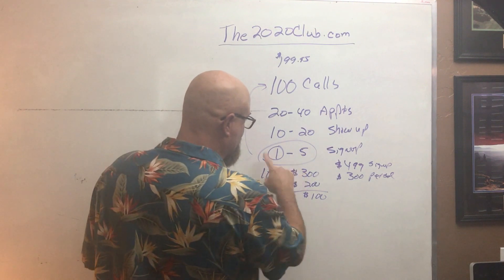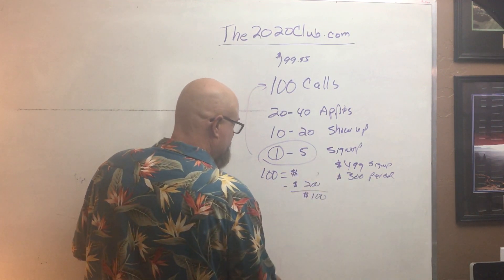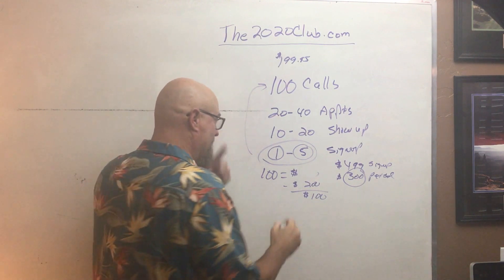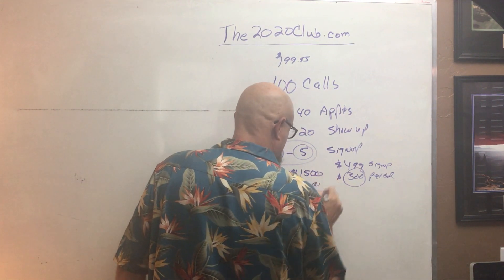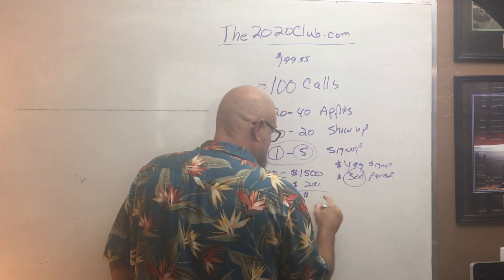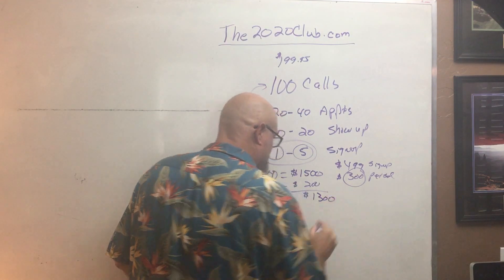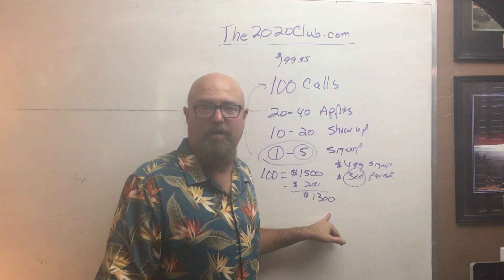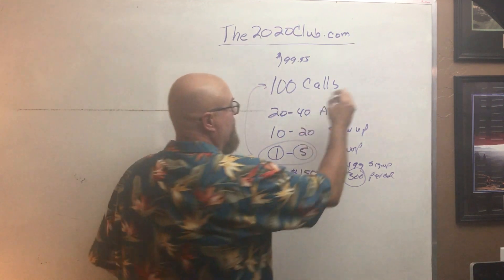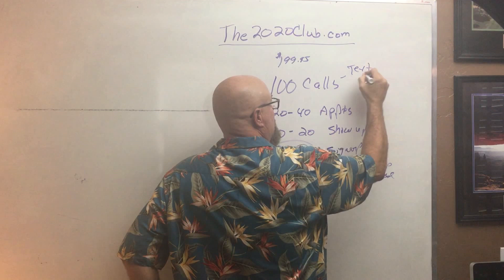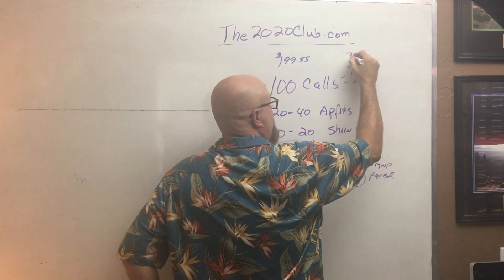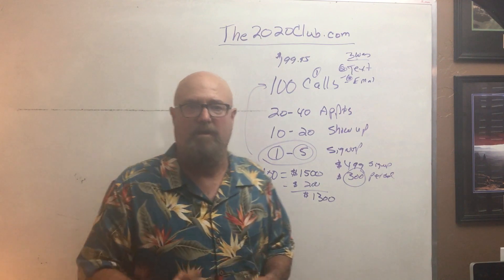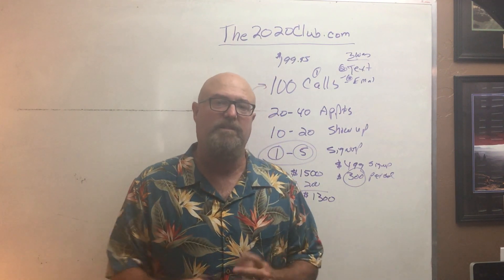Now let's go to the high end. Let's say I get five sign-ups at $499 where I'm making $300. That's $1,500. Minus the same lead cost of $200, I'm at $1,300 profit instead of $100 profit. So if I want to make anywhere from $100 to $1,300, what do I need to do? I need to start contacting 100 people. Not only do I call them, we text them and we email them — three ways we contact. Calling is number one, texting is number two, email is number three. That's how we're getting the maximum response rate out of these 100 telephone interview leads.